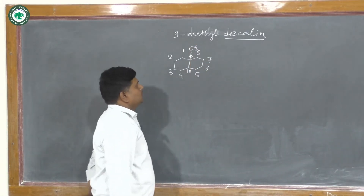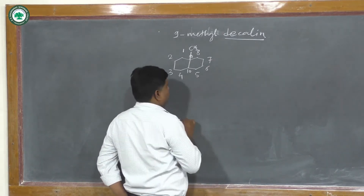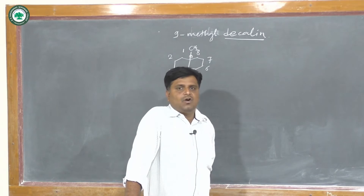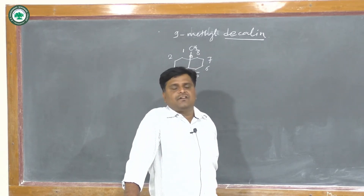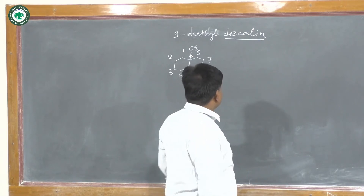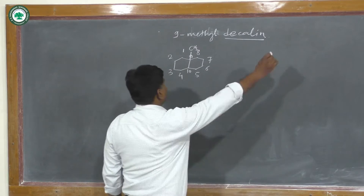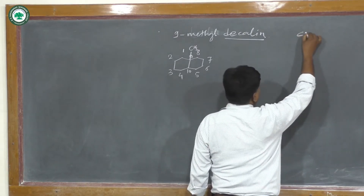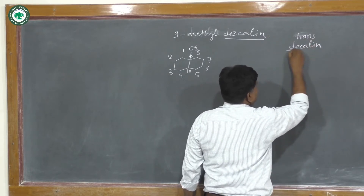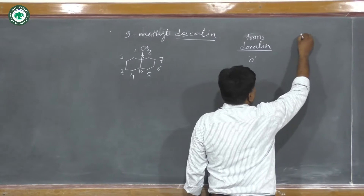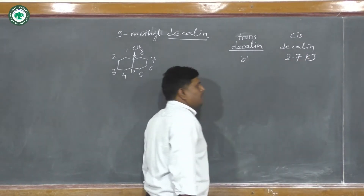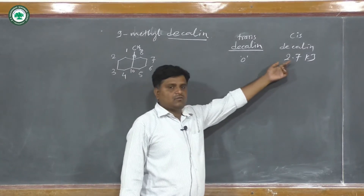Now we are going to discuss about the energy calculations. One question arises: the difference between the potential energy of cis and trans-9-methyldecaline is less than the difference between the potential energy of cis and trans-decaline. In the last lecture, we discussed the energy of decaline: trans-decaline has 0 kJ and cis-decaline has 2.7 kJ. We have already seen how it is calculated.